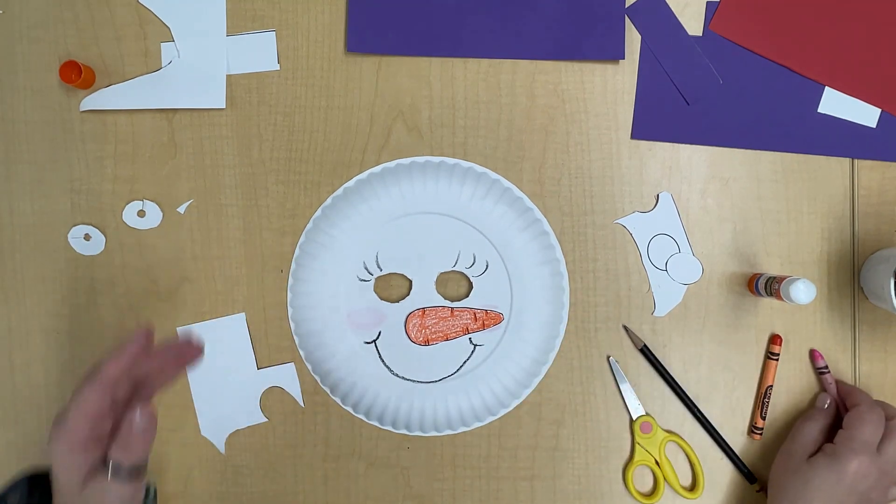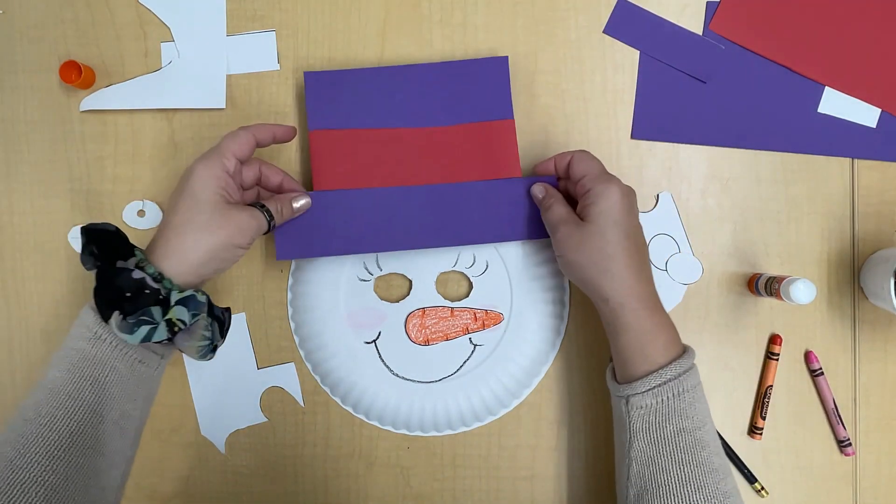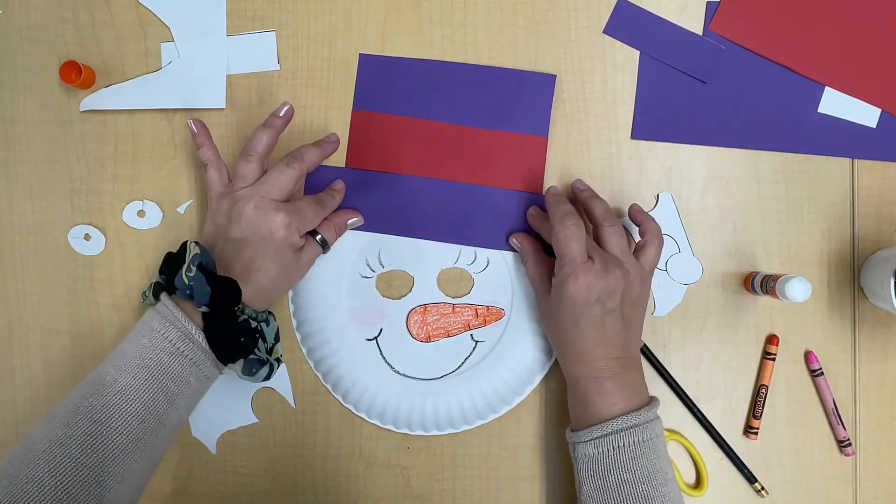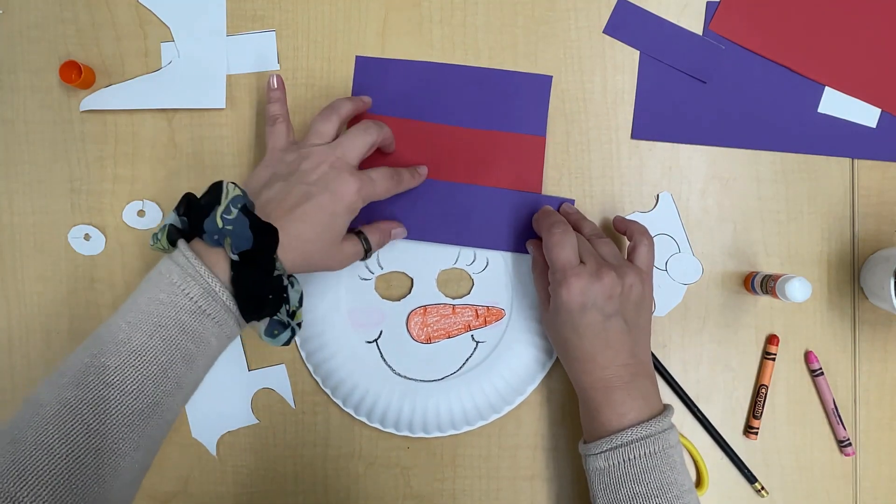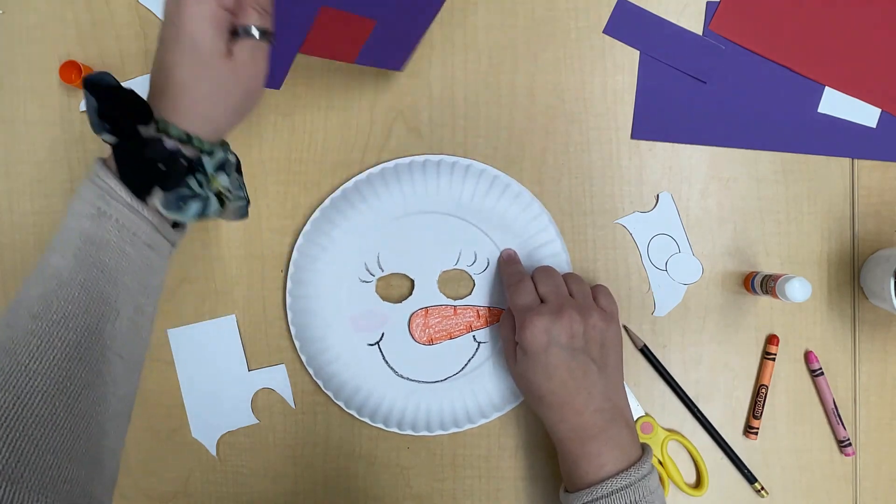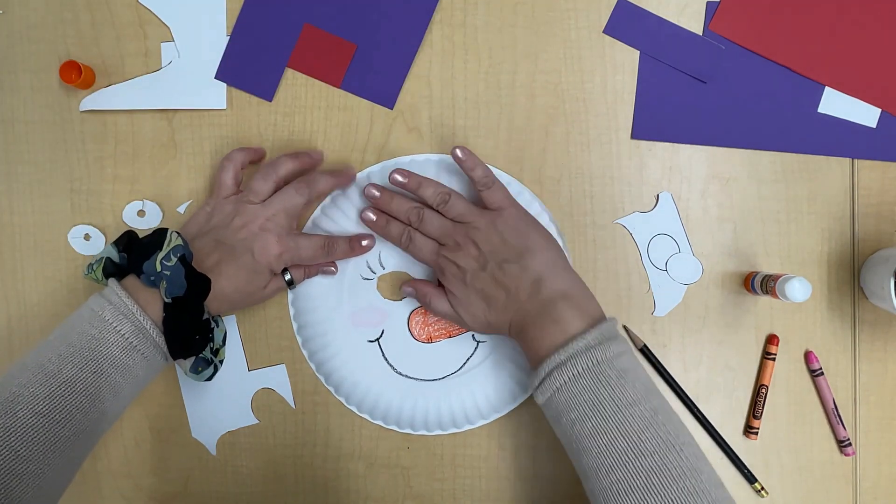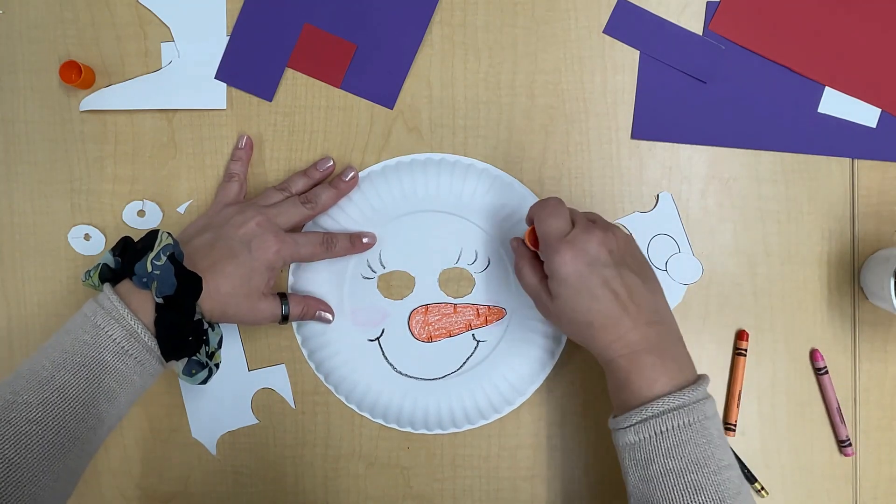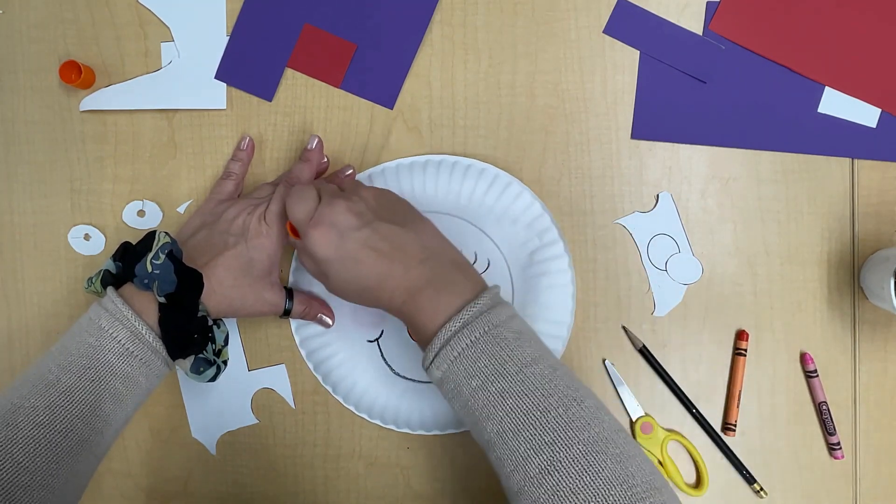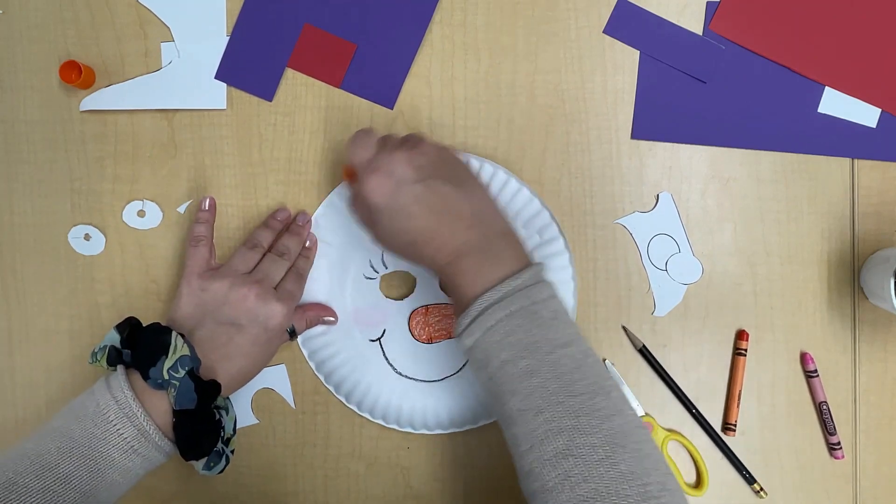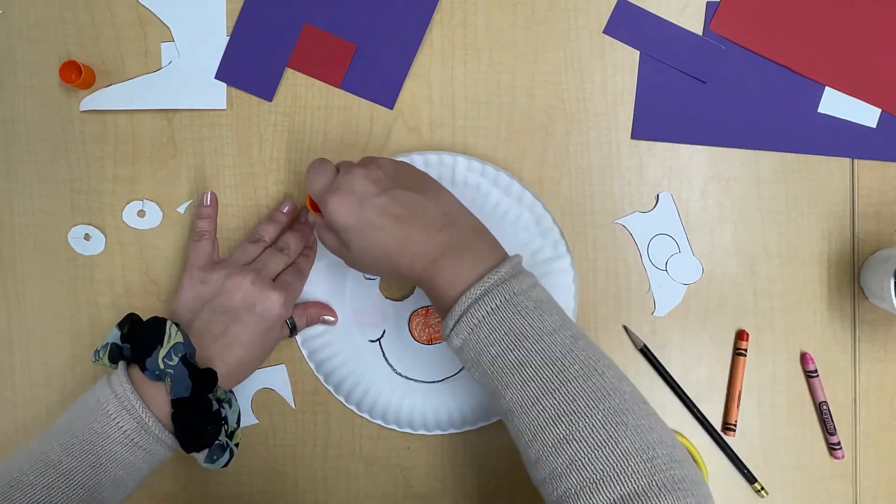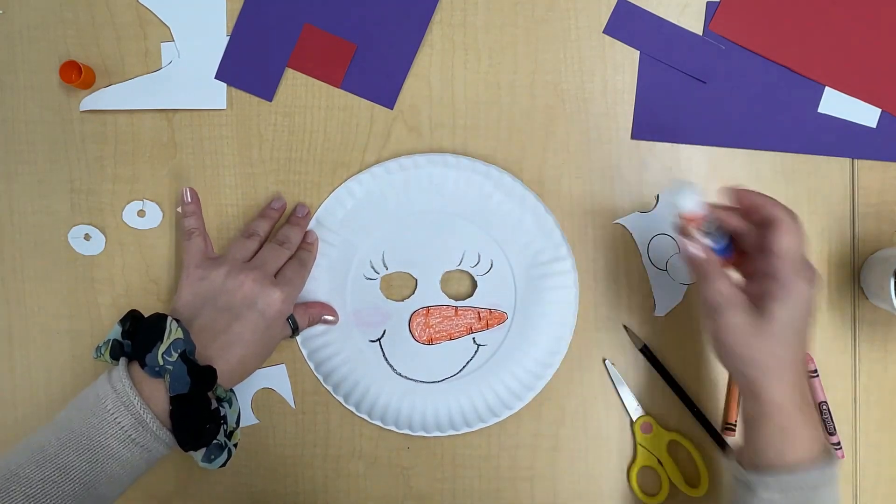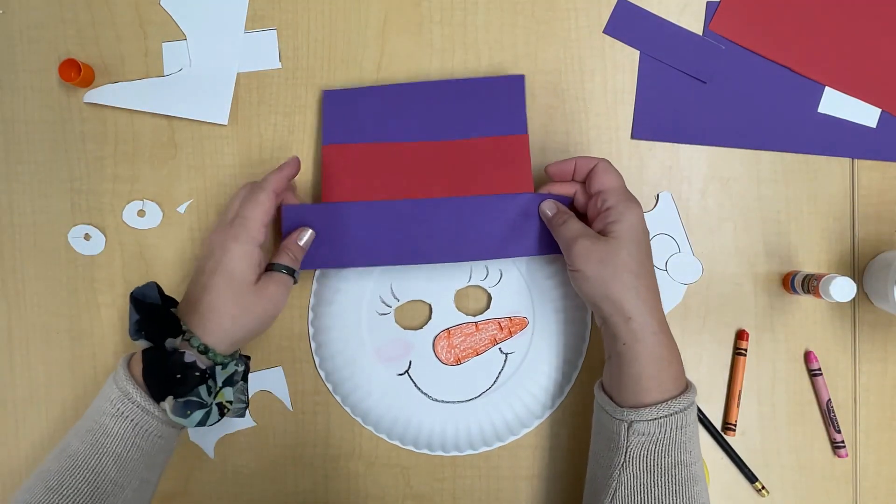Now comes the time to put the snow person's hat on. Get a feel for where the hat will go - right here. I'm going to put glue all on this part of the paper plate where the brim is going to go, and then I'm just going to put glue all over here and put my hat on.